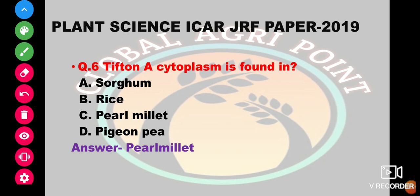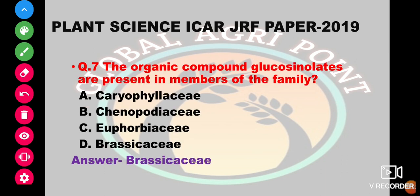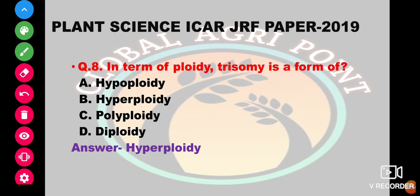Tipton, a cytoplasm, is found in sorghum, rice, pearl millet, or pigeon pea. The answer is pearl millet. Organic compound glucosinolates are present in the member of family Caryophyllaceae, Chenopodiaceae, Euphorbiaceae, or Brassicaceae. The answer is Brassicaceae.